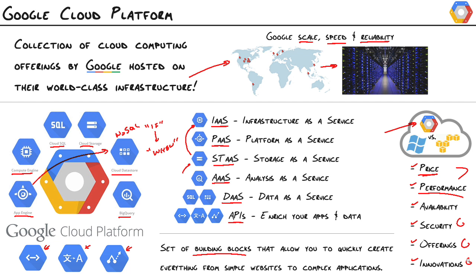Finally, innovation is another big area where Google shines, because they've been innovating since the late 90s. You can see it all over their cloud — App Engine, BigQuery. Just at Google I/O in June, they announced Cloud Dataflow, which is again another product where there's just nothing out there like it on the market.